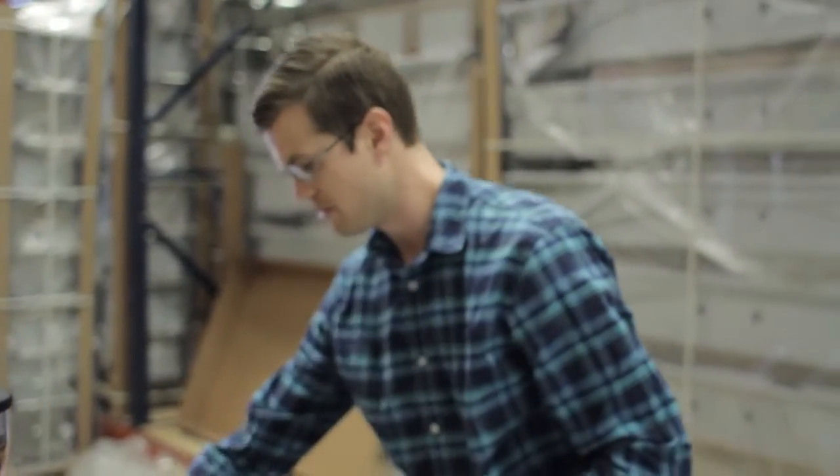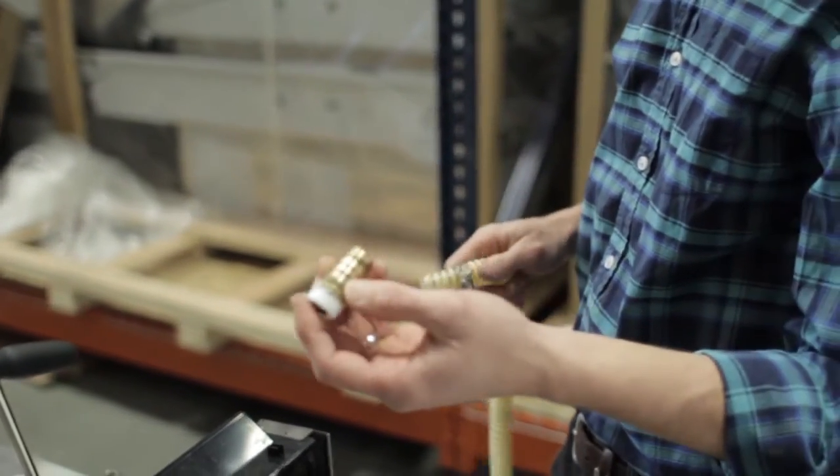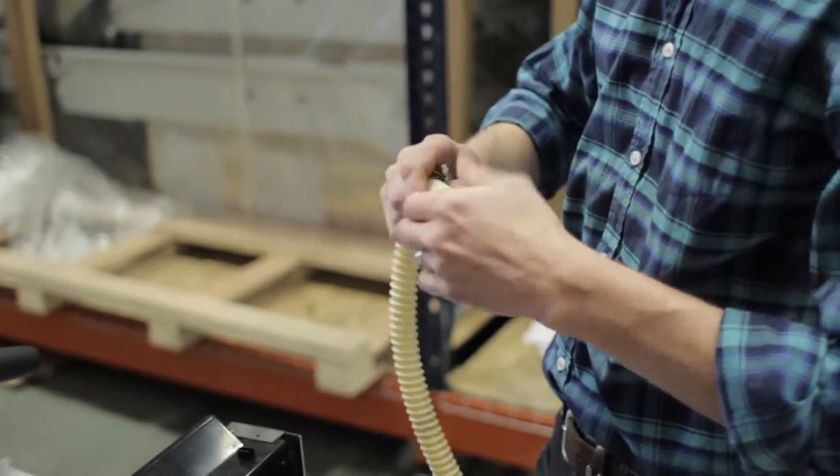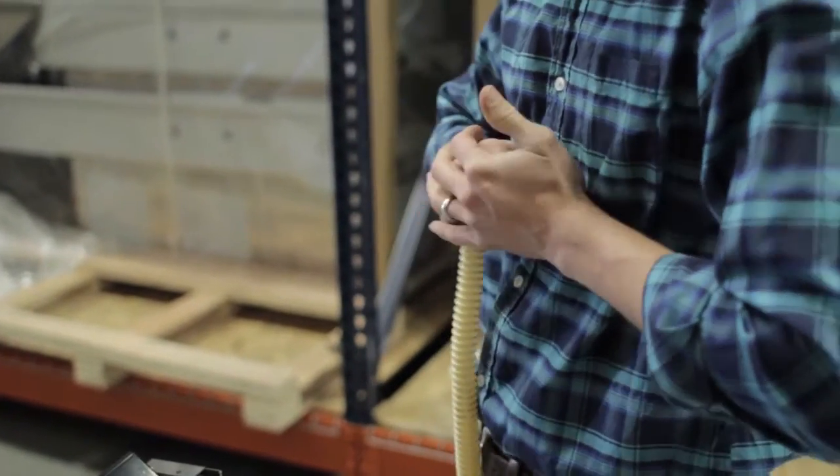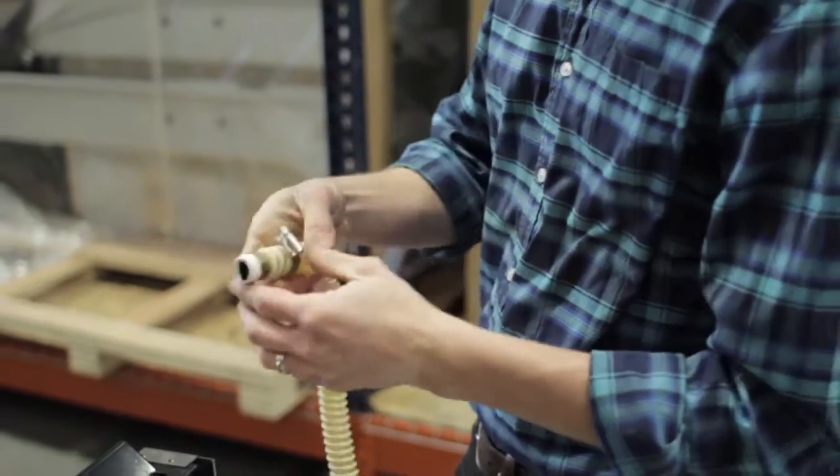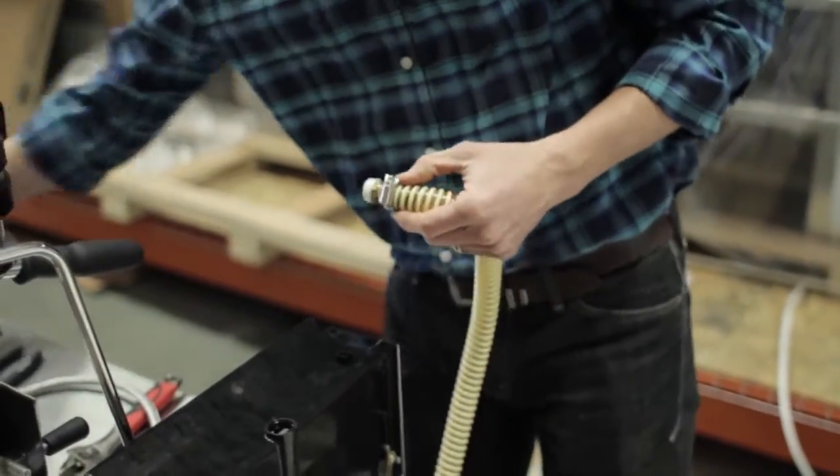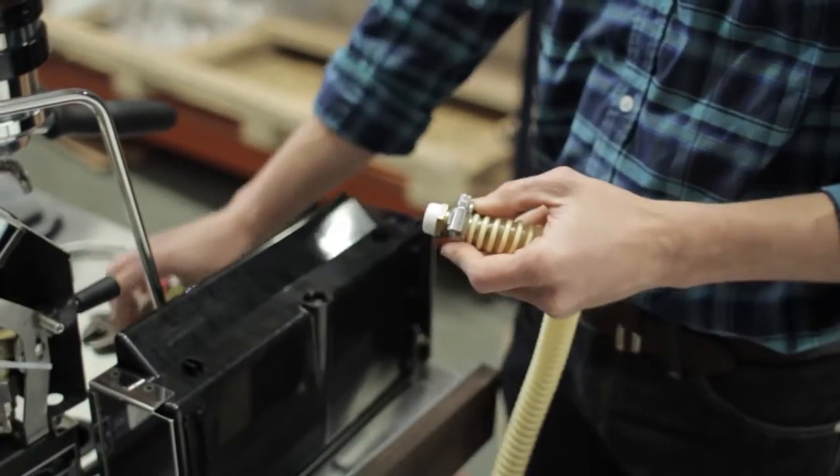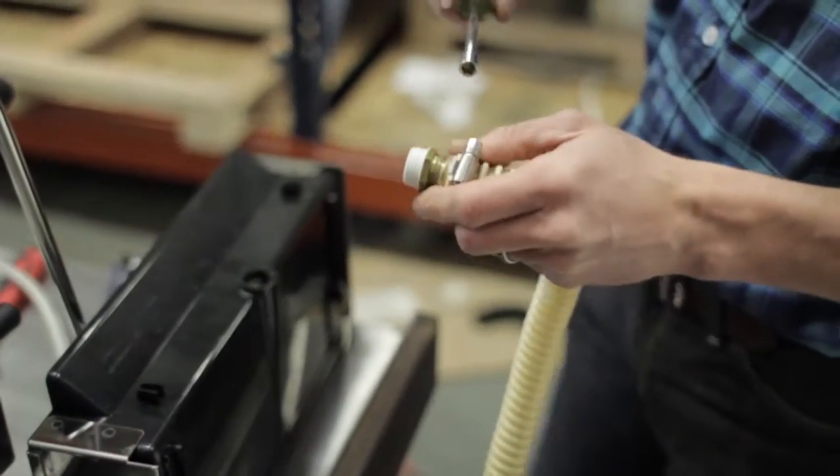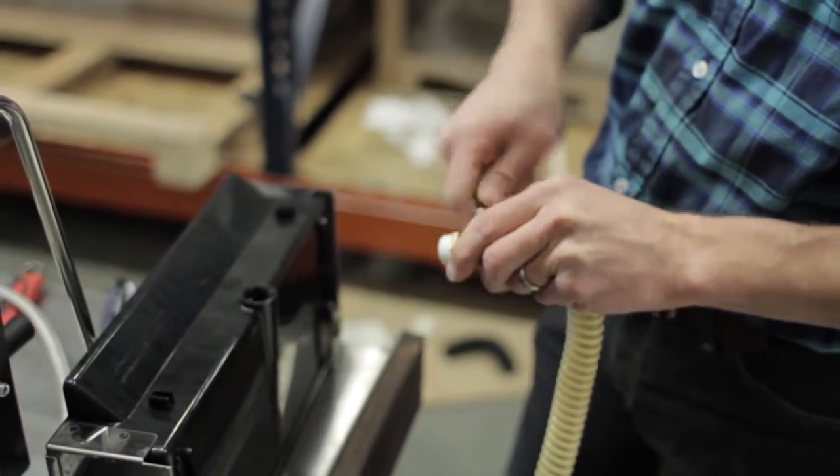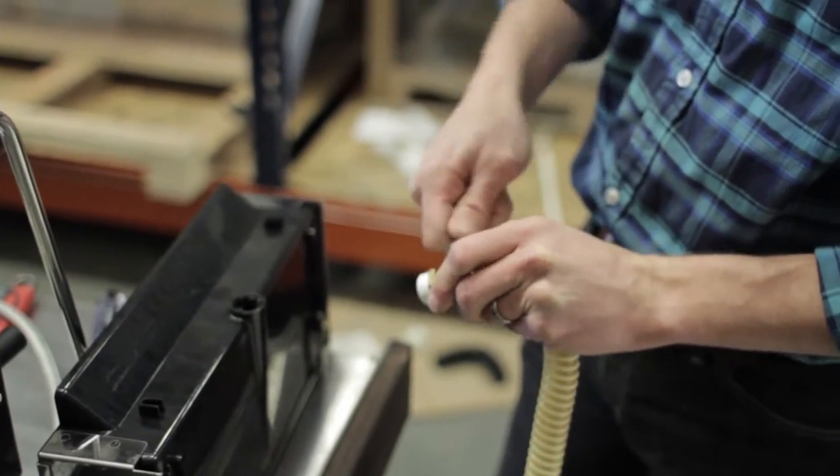And then find the drain hose also included with your machine and the barbed fitting. We'll press those together. And we'll use a 7mm nut driver or a flathead screwdriver to tighten up the pipe clamp. Get that nice and snug.